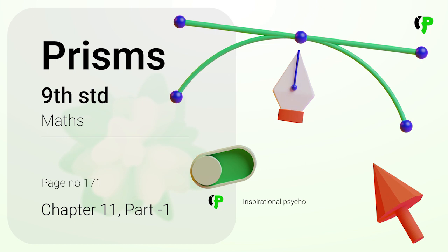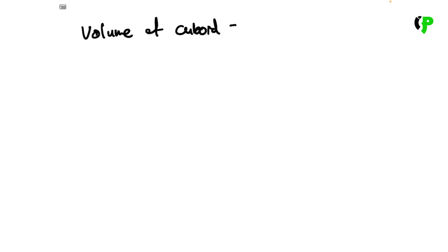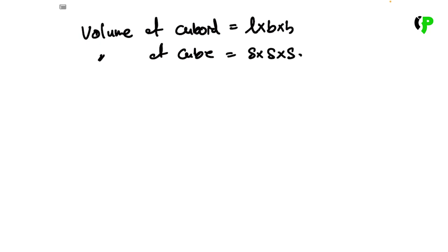Let's talk about two formulas and apply them to solid shapes. Volume of a cuboid is equal to L × B × H. Volume of a cube is equal to side × side × side.